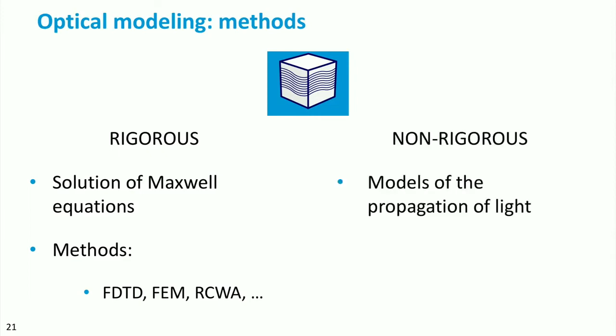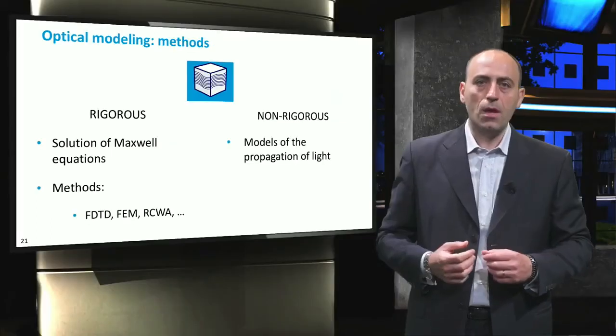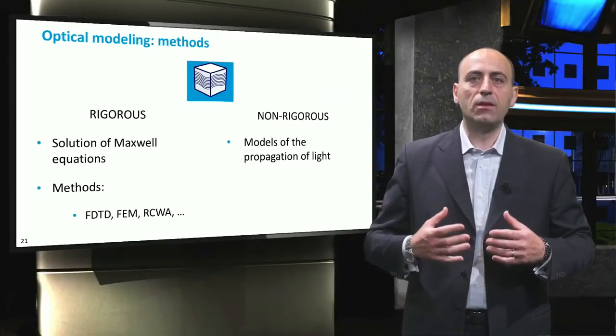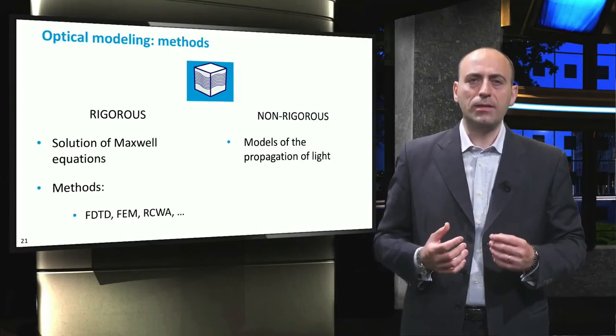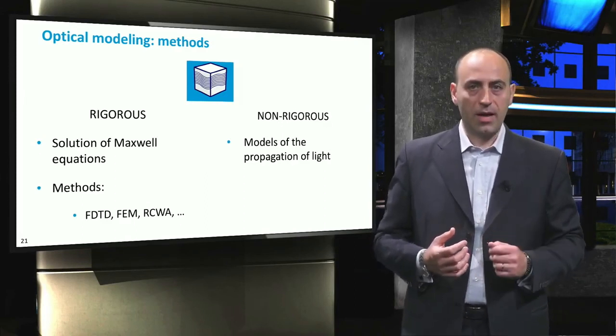On the other hand, non-rigorous approaches do not compute the intensity of the electromagnetic field inside the device. Rather, they rely on equations and models that describe the propagation of light in different conditions. For example, Lambert-Beer's law is used to describe absorption in a thick, uniform layer, or the Scalar Scattering theory is employed to model the interaction of light with small, random textures. These approaches aim at making the problem to solve simpler, but can be as accurate as rigorous methods if properly applied.